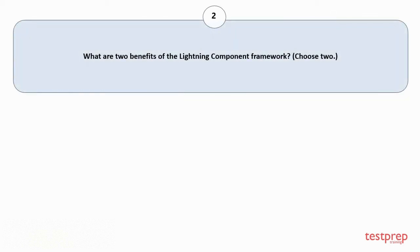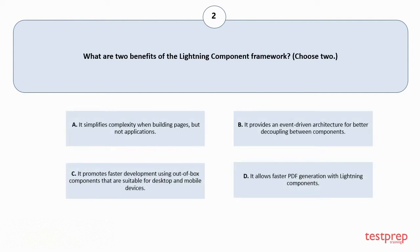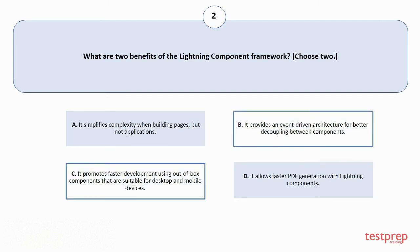Question number 2: What are two benefits of the Lightning component framework? Choose 2. Your options are: A. It simplifies complexity when building pages, but not applications. B. It provides an event-driven architecture for better decoupling between components. C. It promotes faster development using out-of-box components that are suitable for desktop and mobile devices. D. It allows faster PDF generation with Lightning components. The correct answers are option B and C.